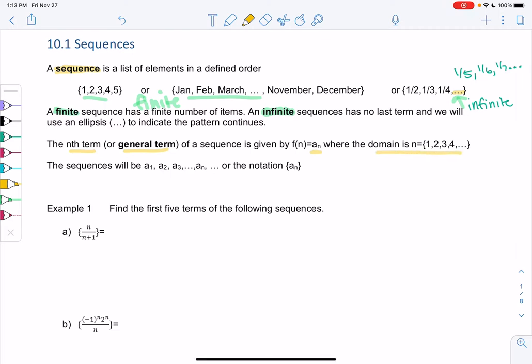So we can't find f of 1 half, but we'll find a1, a2, a3, all the way up to a_n. So that's what I mean by the domain is whole numbers. We only plug in whole numbers.